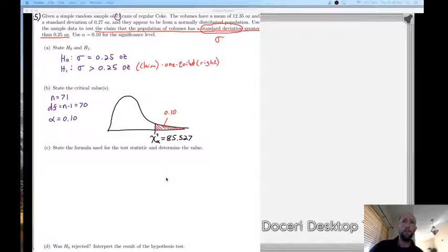So we can go through and fill that in. Next we want to go through and determine the test statistic for this problem. So we have a chi-square formula equals n minus 1 times the sample standard deviation squared divided by the population standard deviation squared.